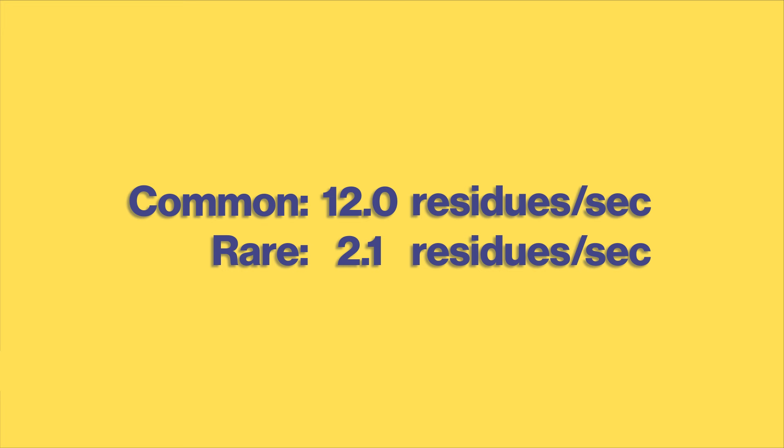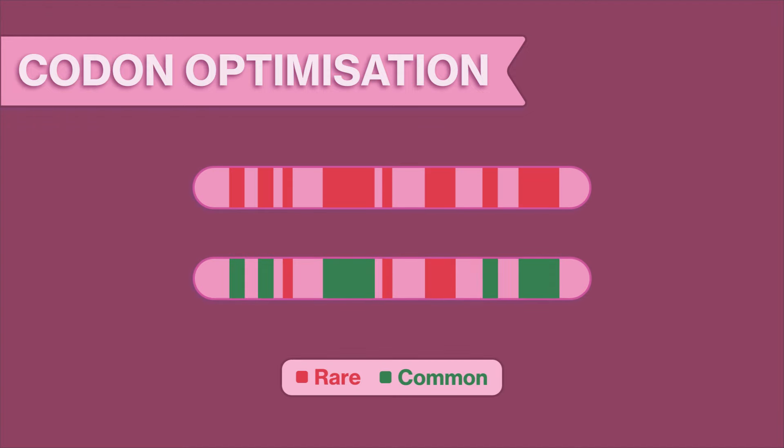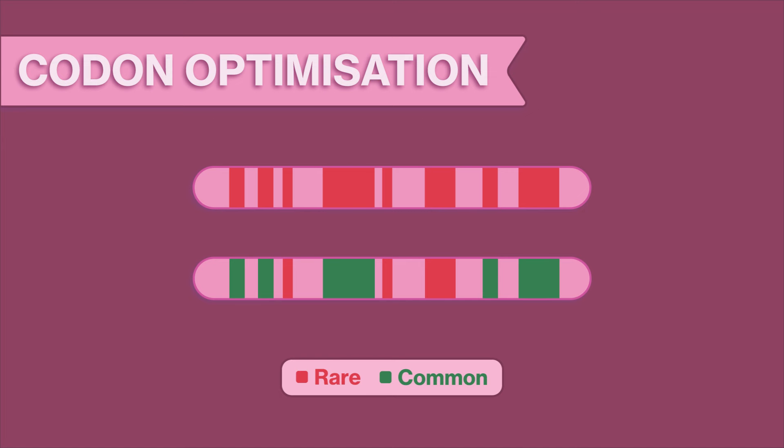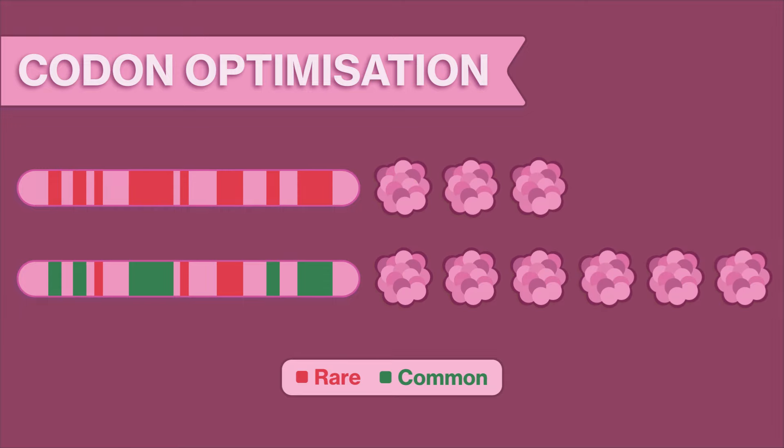Because of their slower translation rate, rare codons are typically considered suboptimal for gene expression. With the rise of gene engineering and codon optimization in the early 21st century, scientists can now manipulate a gene to contain more synonymous common codons. This increases the gene's expression levels and translation efficiency, and therefore boosts protein production, such as for vaccine development.